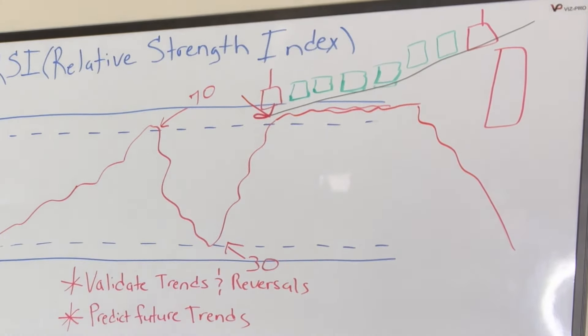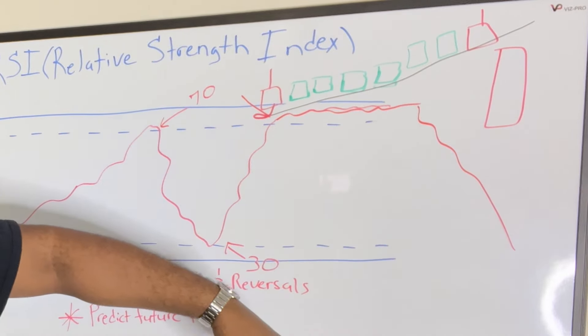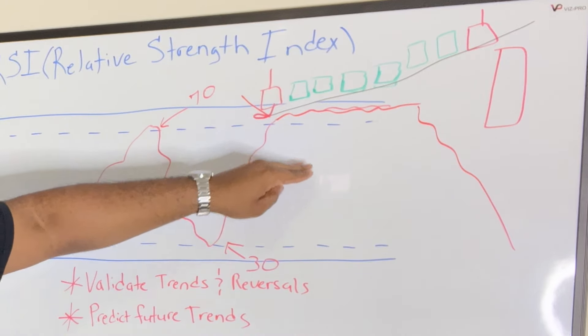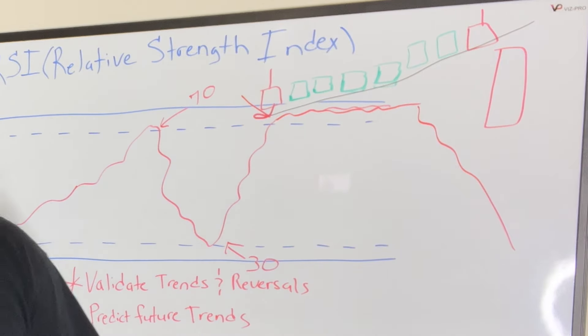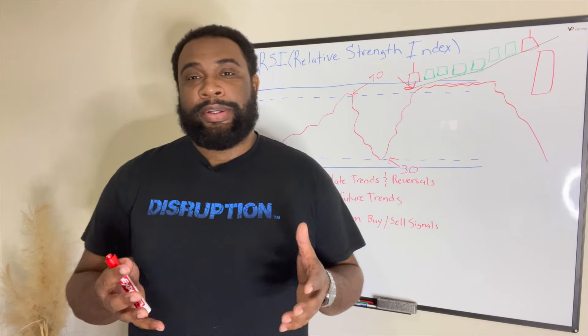It's going to say that okay well we got a doji and stuff like that and oh this is going to be an indicator that we're going to go back down. Have we broken trend? That's what you want to ask yourself so that you're not putting yourself in a bad situation. Always practice, never use indicators alone by themselves, and do your due diligence.